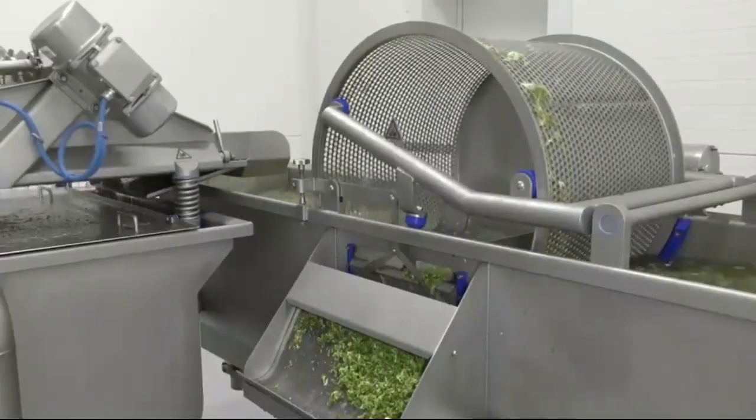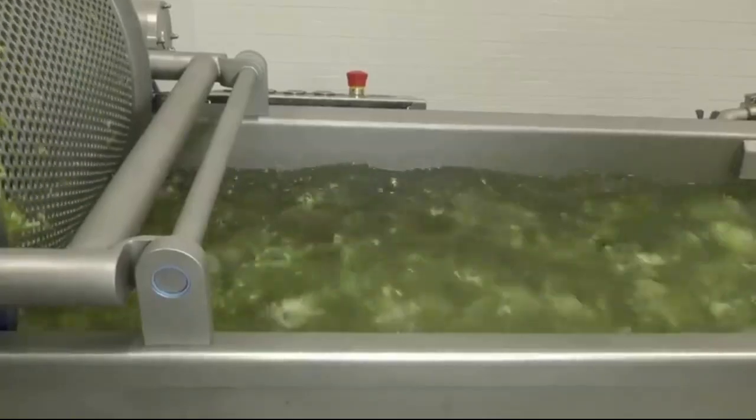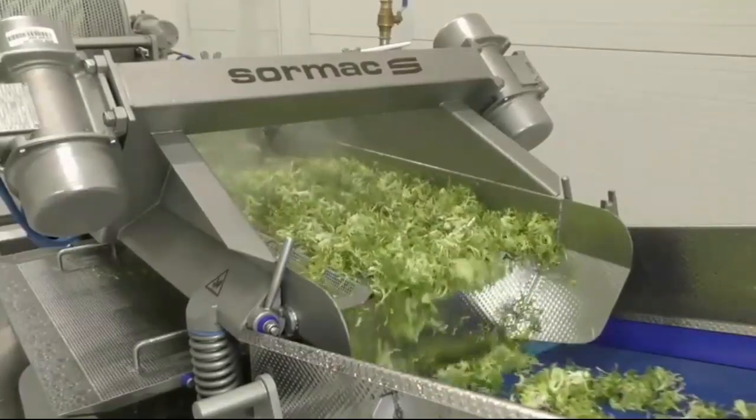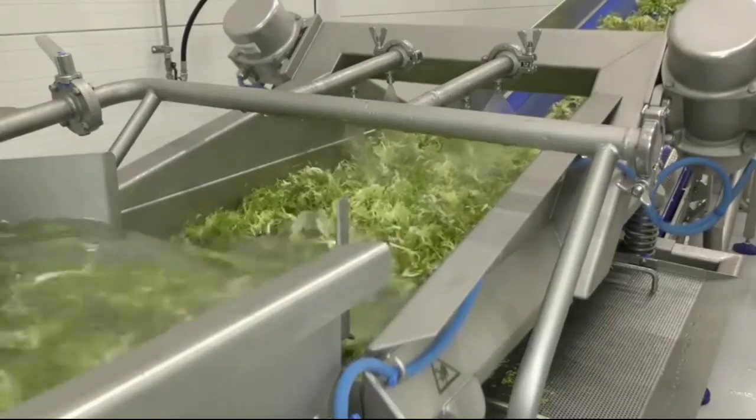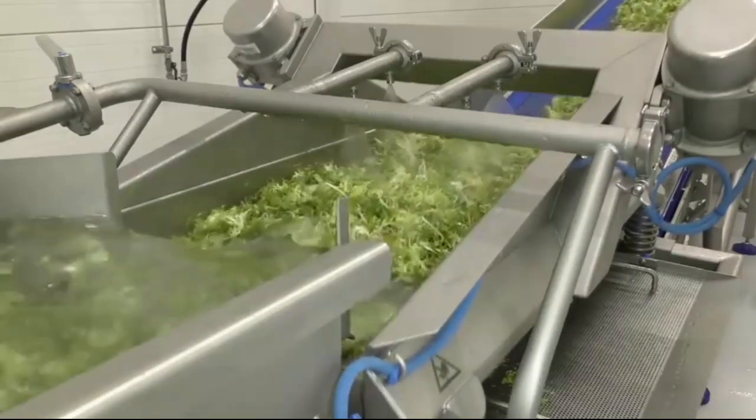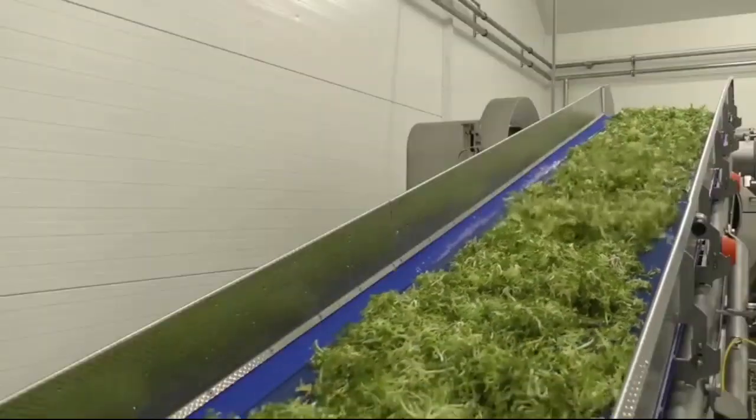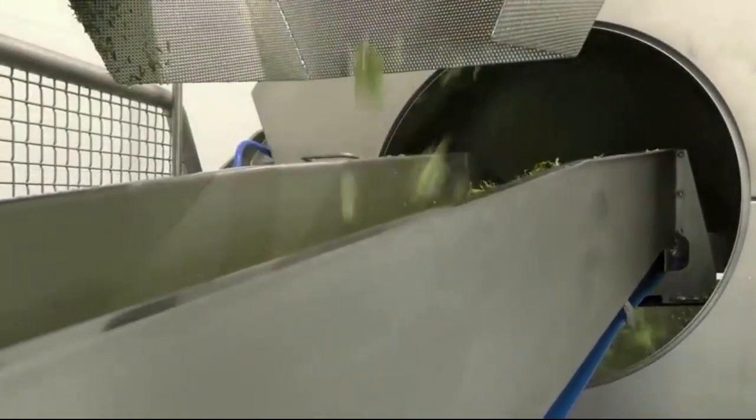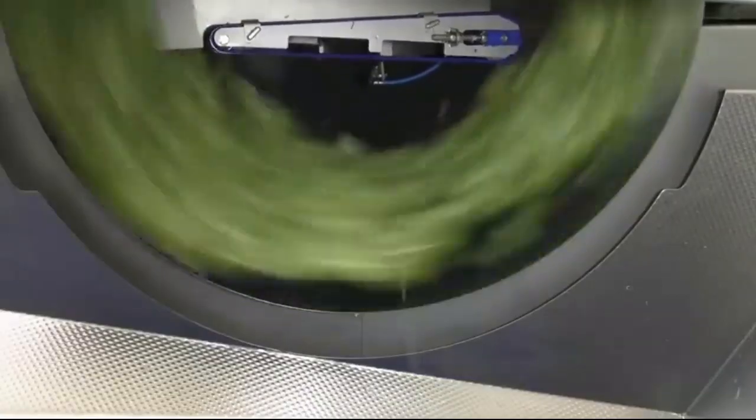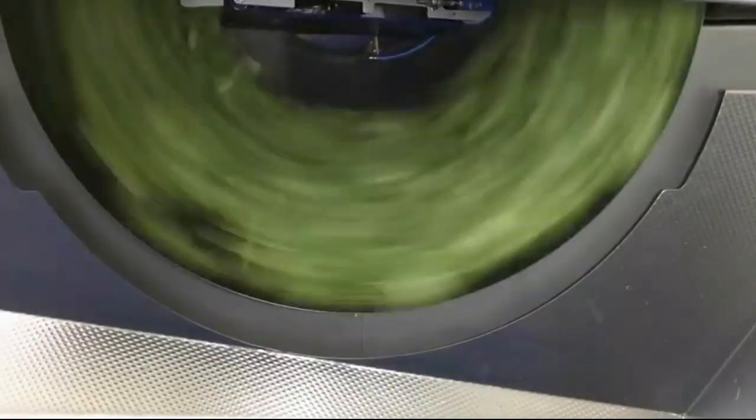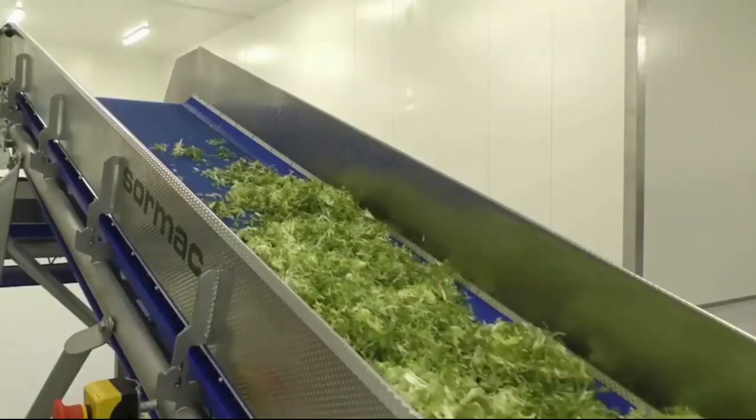Wet leaves cannot be packaged, as they're more likely to rot. For this reason, the leaves are then placed on a vibrating conveyor belt, which shakes off excess water from the product. But that's not the end of it. In addition, moisture is removed by this centrifuge. Only after that can the leaves be sent to the shops. The production line consists of a total of seven separate types of equipment. Together, they're able to process 500 to 800 kilograms of lettuce per hour.